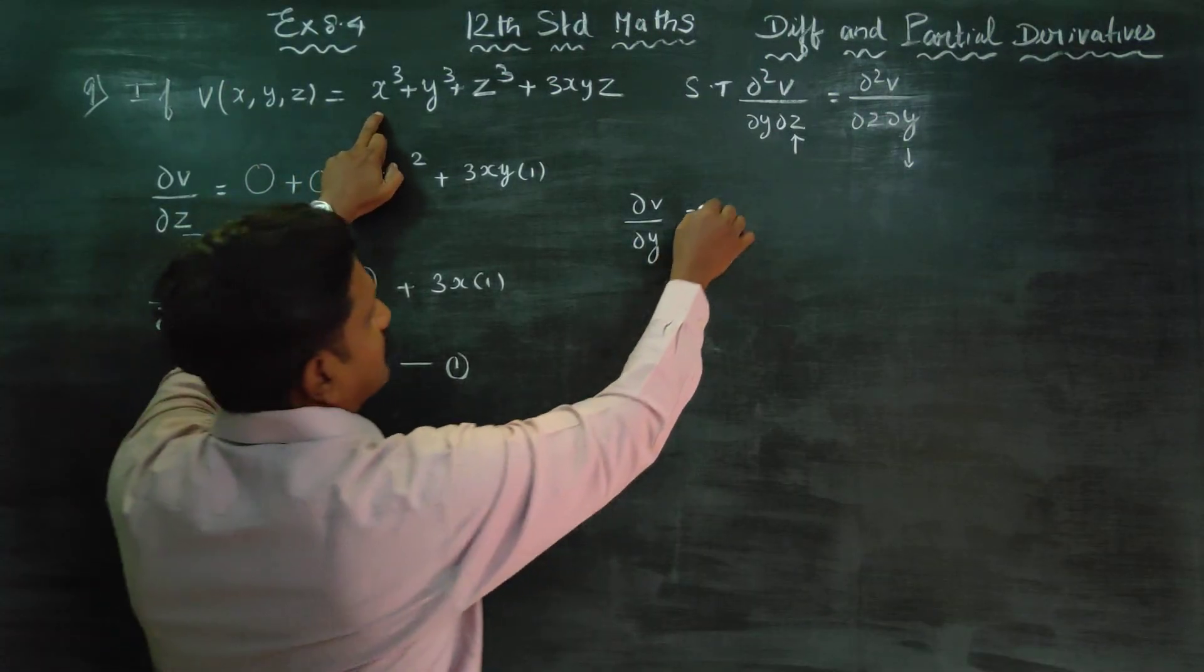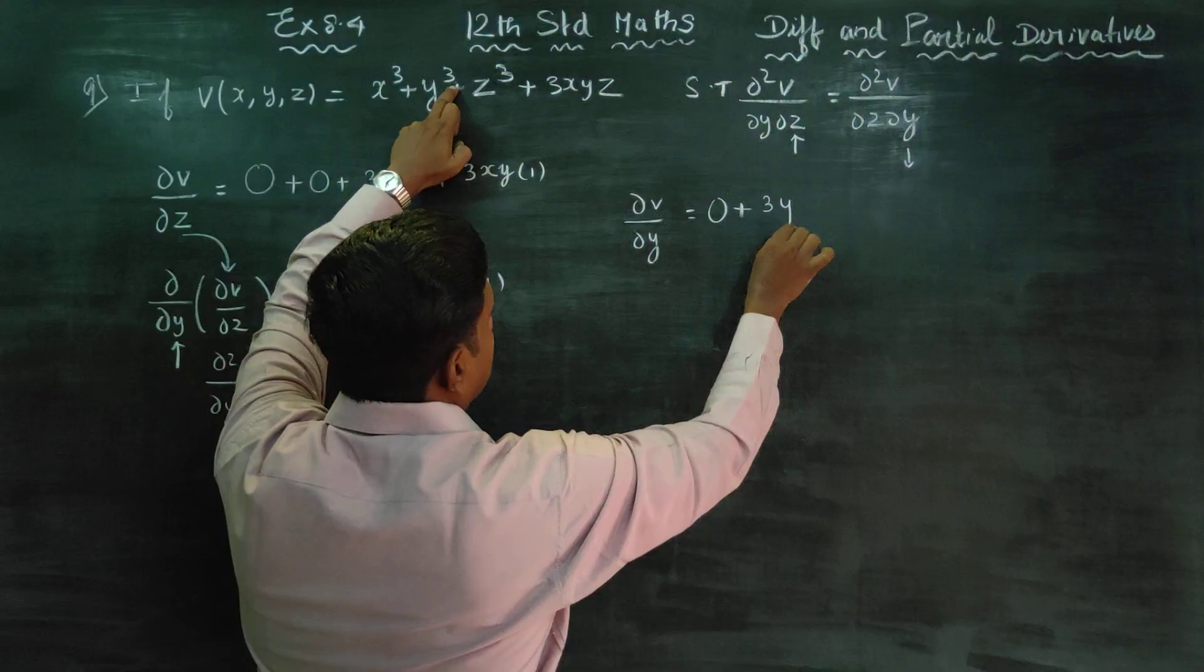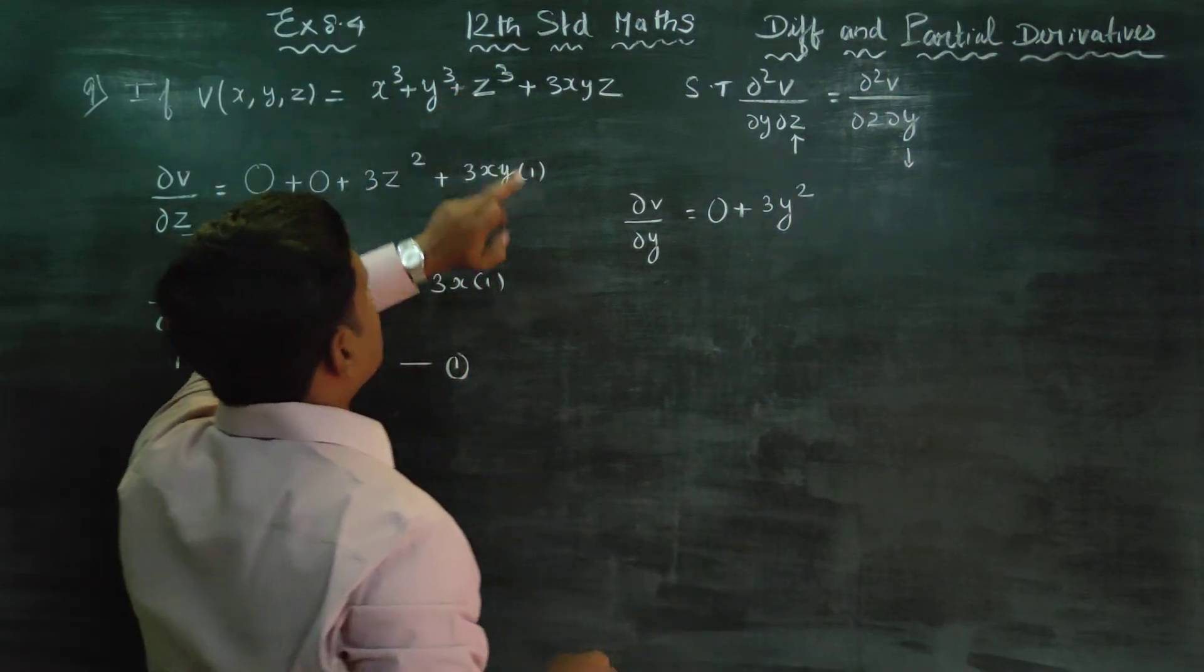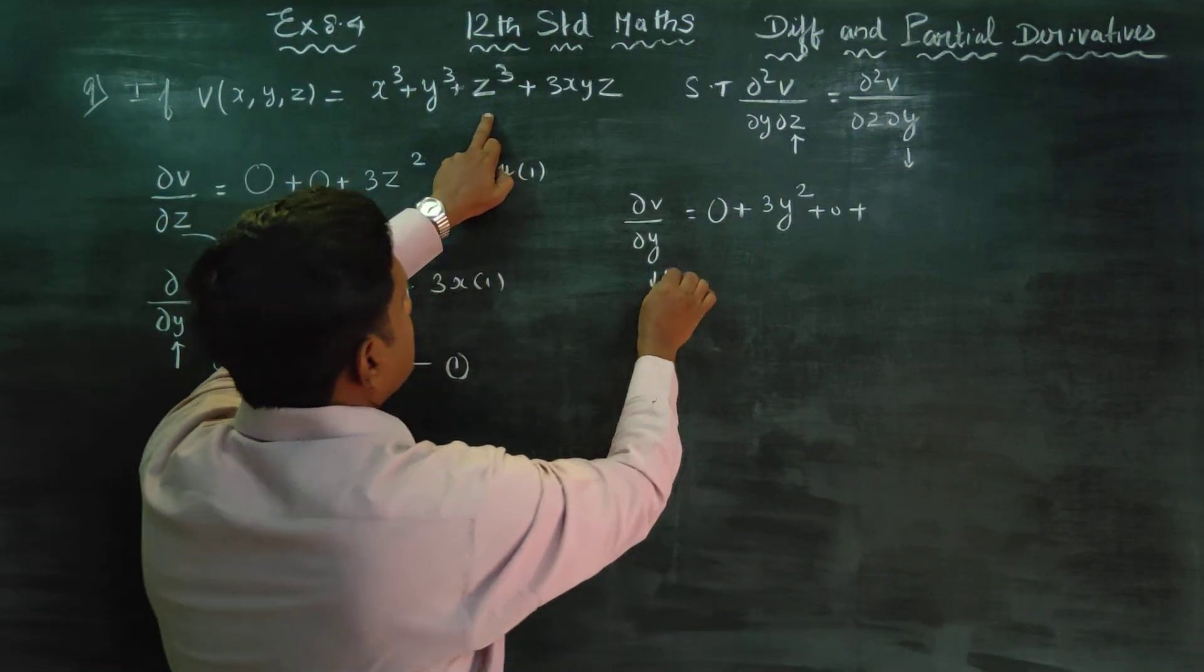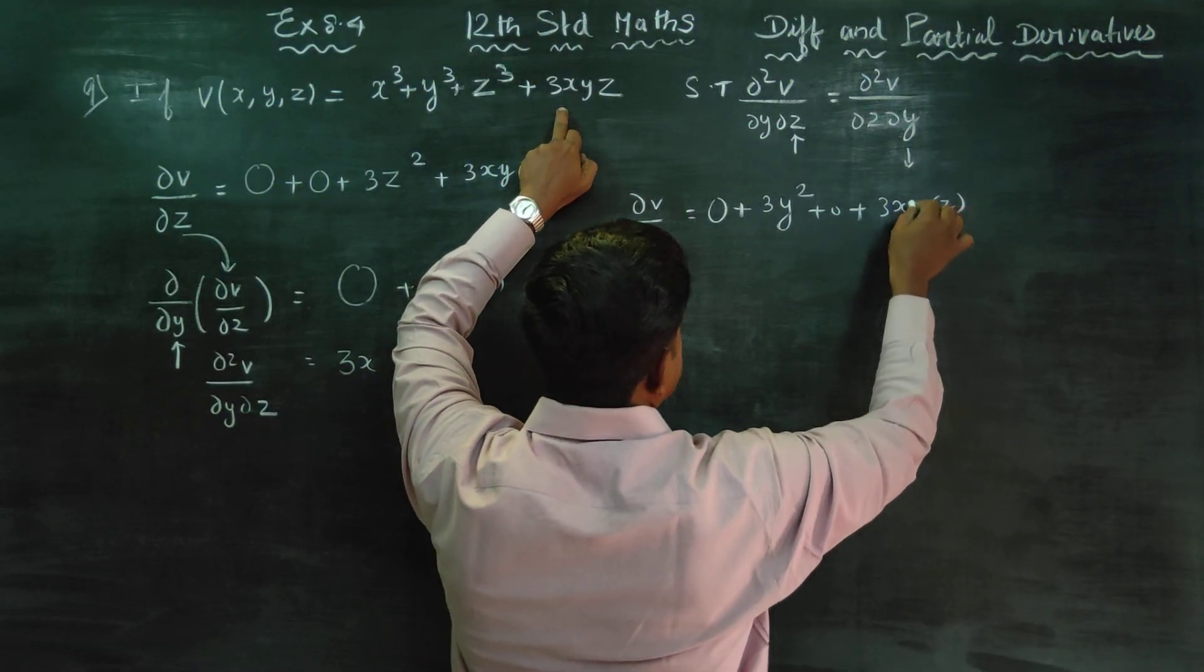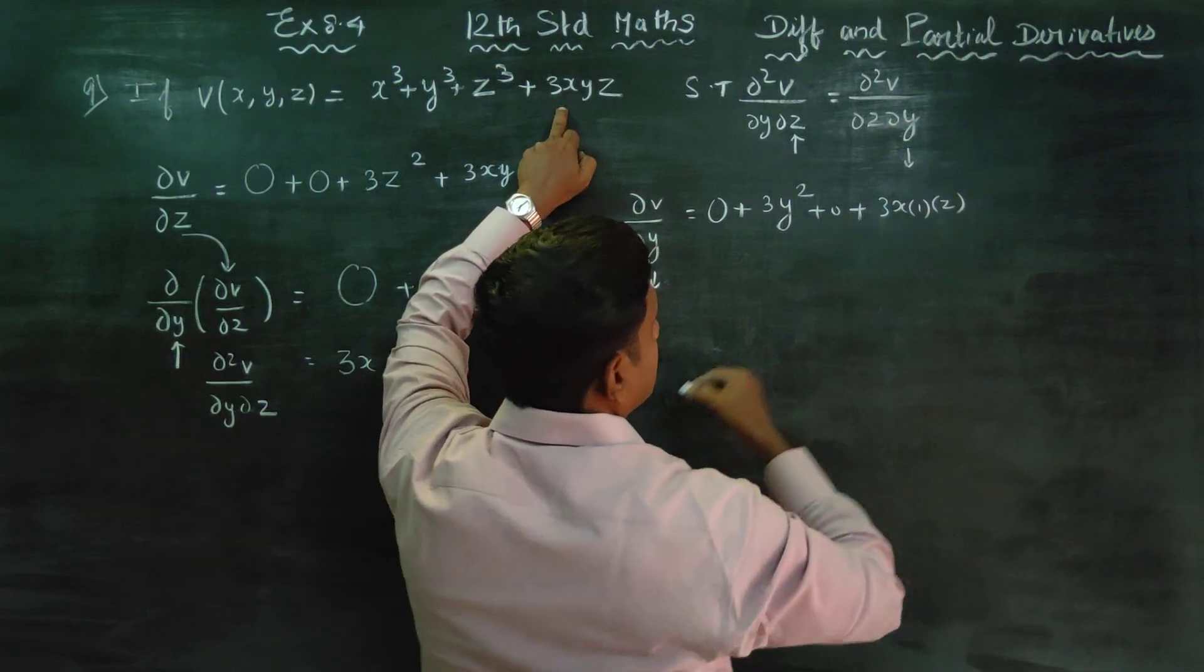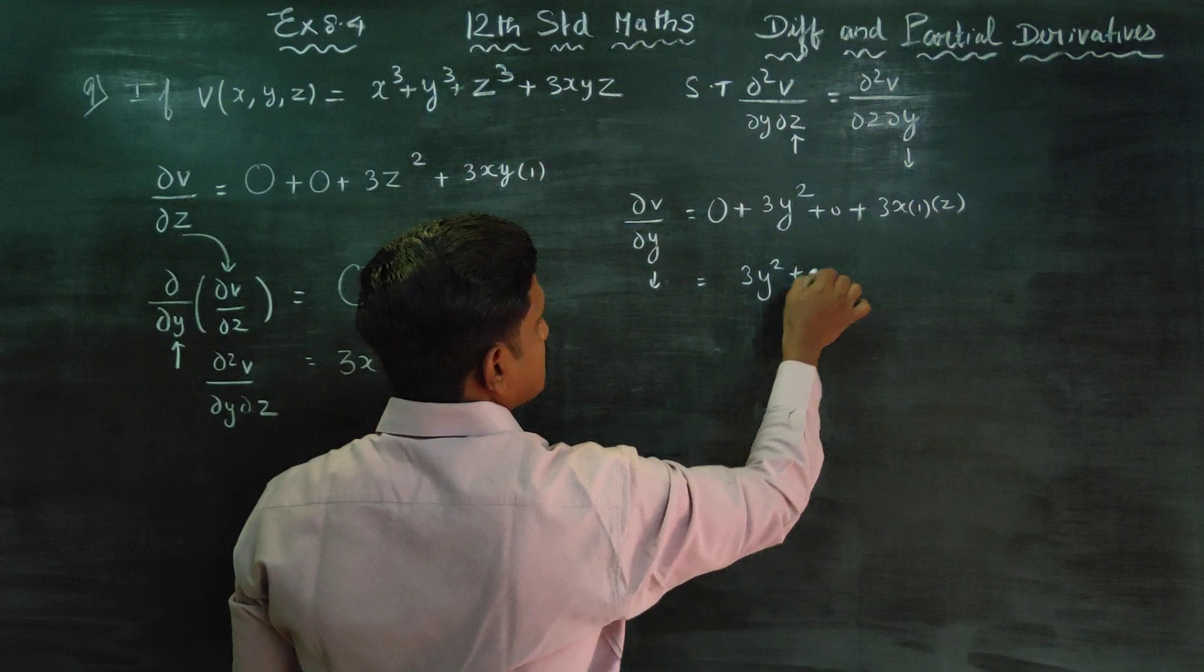In the sum, x is a constant, it's a constant. Z is a constant, zero. Y differentiate: 3 is a constant, x is a constant, z is a constant. y gives 1. The answer is 3y² plus 3xz.